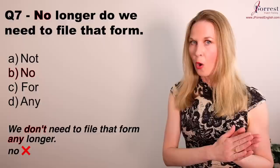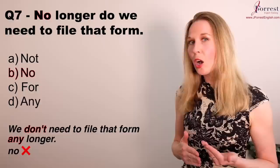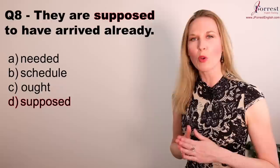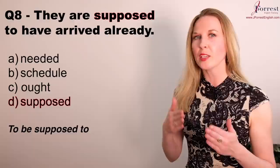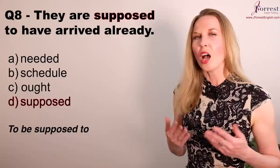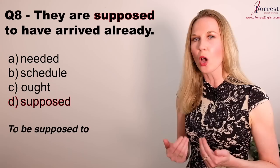The more popular sentence structure is 'we don't need to file that form any longer'. Number eight: They are supposed to have arrived already. The expression is 'to be supposed to' — they are supposed to have arrived. Based on the sentence structure, the only possible choice is 'supposed to'. I made a lesson on this topic; I'll leave the link in the description below.